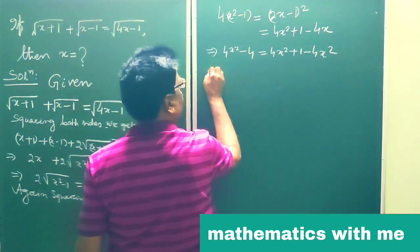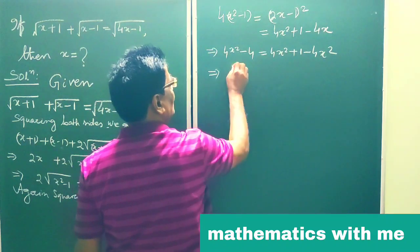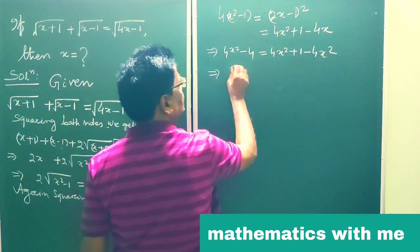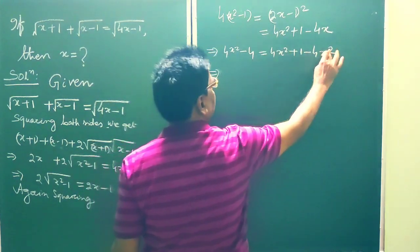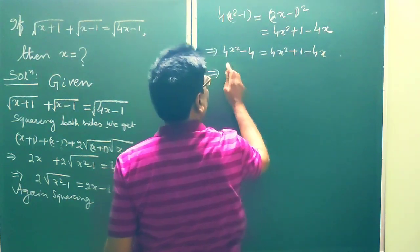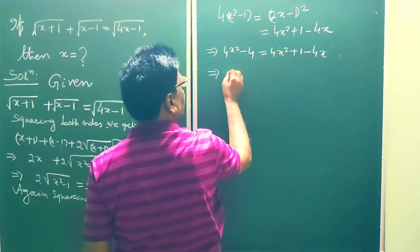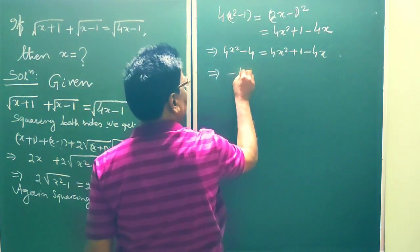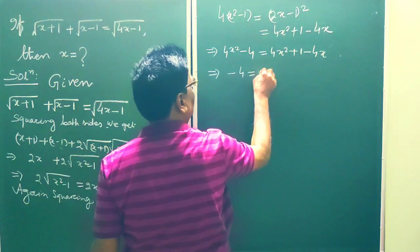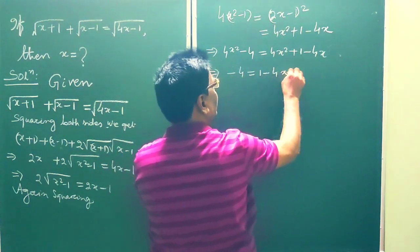This implies 4x squared minus 4 is equal to 4x squared plus 1 minus 4x. The 4x squared terms cancel, leaving minus 4 is equal to 1 minus 4x.